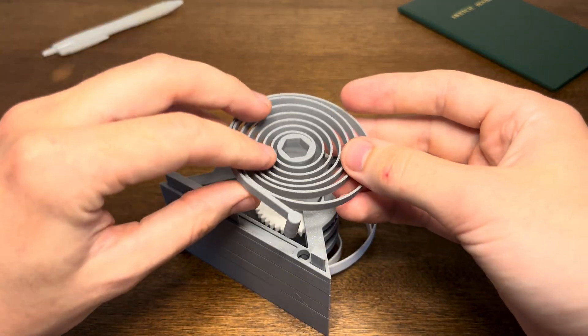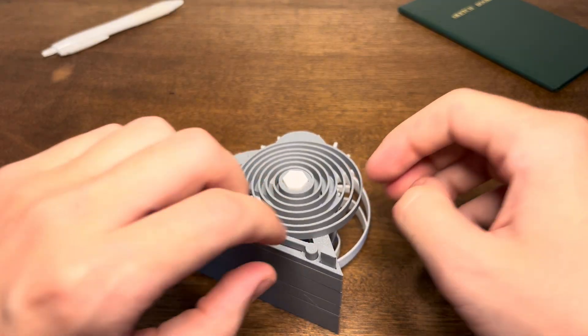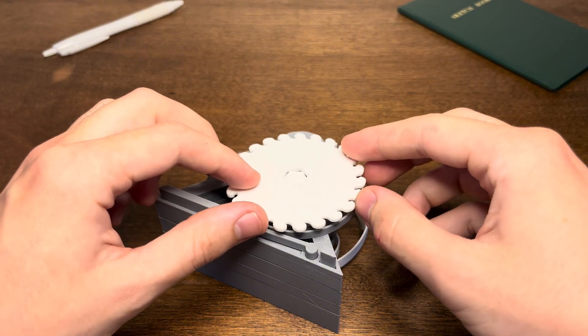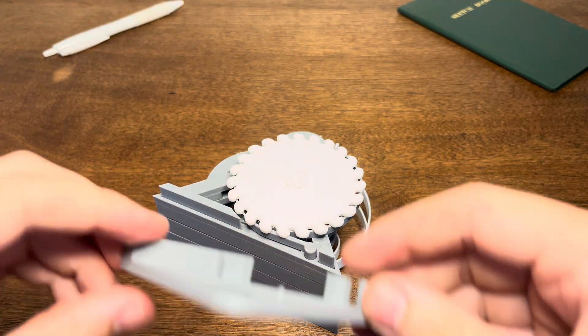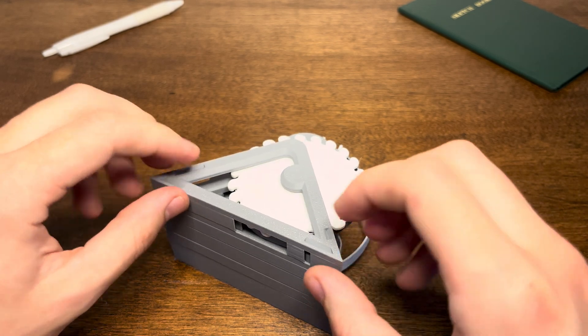Next up is this spring. So this is going to be powering the whole system. Just slot that in that little hole there. As well as this winding apparatus that you'll basically be interfacing with to wind it up. And then the final piece. There you go.